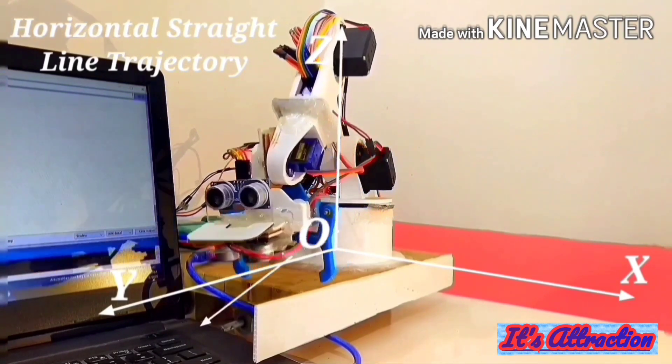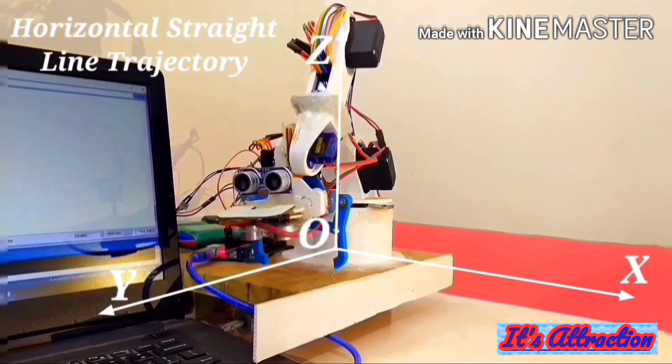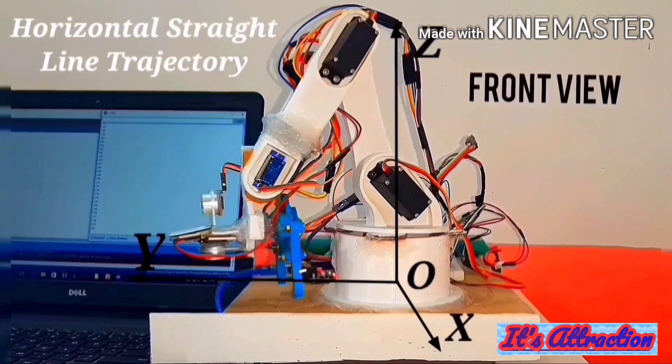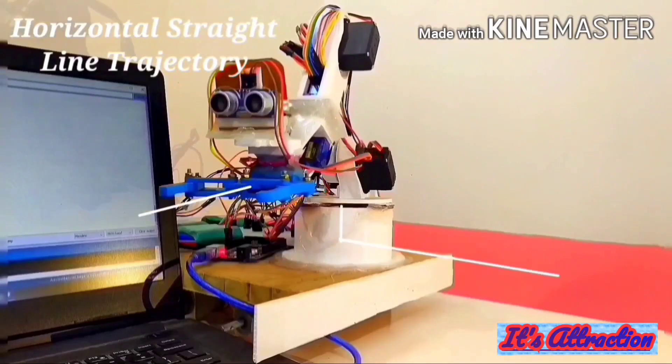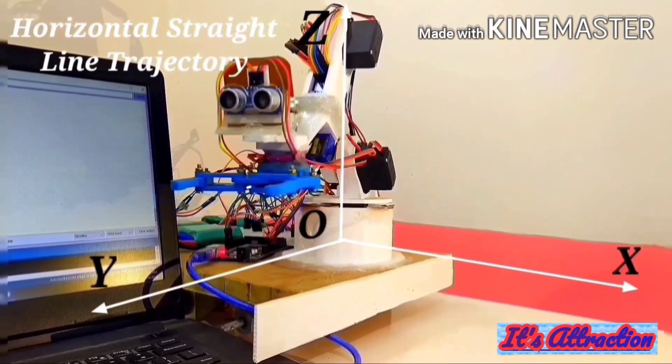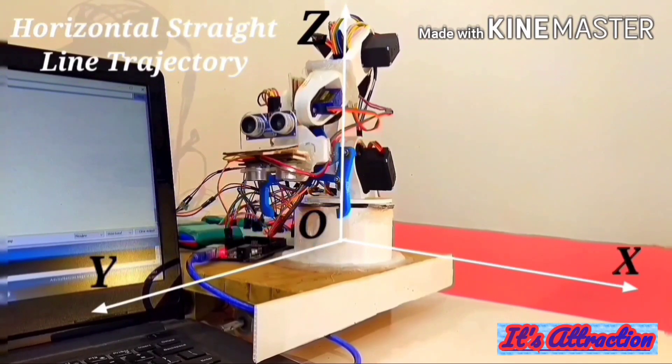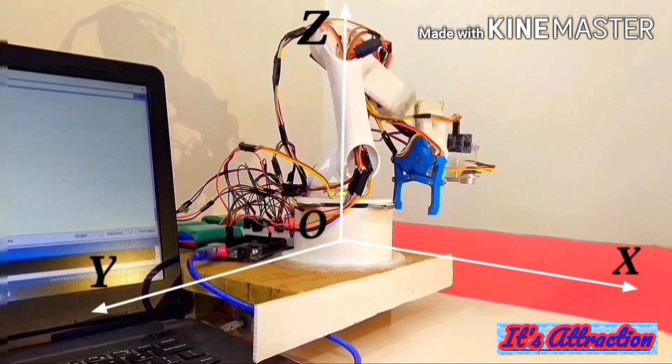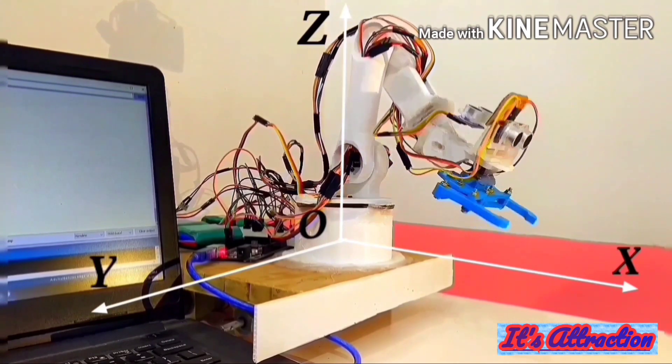So here is the demonstration of the straight line motion of the arm. This semi-autonomous robotic arm moves fast and is highly stable and reliable.